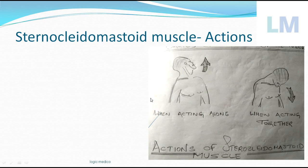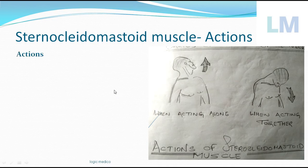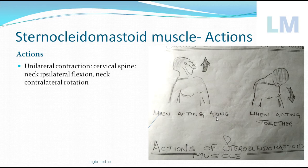When a muscle contracts, it brings about movement — that is its action. When the sternocleidomastoid acts alone on one side, it twists the neck to the opposite side. For example, if the left side contracts, the neck twists to the right, and vice versa. In technical terms, unilateral contraction causes ipsilateral cervical flexion and contralateral rotation — bending of the neck to the same side and rotating the chin to the opposite side.